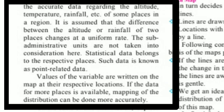Statistical data belongs to the respective places, and such data is known as point-related data. This means the data is tied to particular specific locations. The values of the variable are written on the map at their respective locations, and if data for more places is available, mapping of the distribution can be done more accurately.